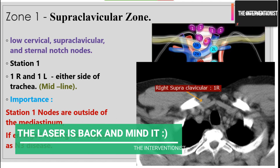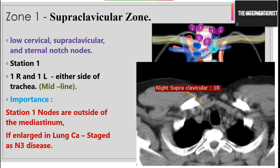The importance of the supraclavicular zone lymph nodes: if a lymph node is present in a case of either right or left-sided carcinoma of the lung, it is N3 stage. So station 1R and 1L with a lung mass is usually N3 status in TNM staging. This is an imaging representation of a right supraclavicular node, labeled as 1R since it is on the right side of the trachea.